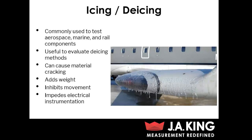The next type of testing is icing and de-icing. This actually involves building up a layer of ice on the exterior of the part. It's typically used to test aerospace, marine, and rail components. It can be useful to evaluate de-icing methods — if your part has a de-icing method including heaters or perhaps a chemical de-icing method, we can build up ice on the part to help evaluate those methods. Also, icing can cause material cracking, it adds weight to parts, it can inhibit movement of actuating components, and ice buildup can impede electrical instrumentation including antennas, optical devices, and meteorological equipment.